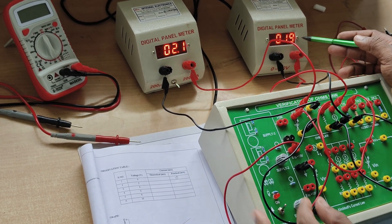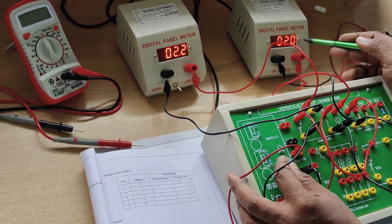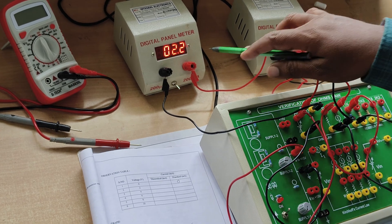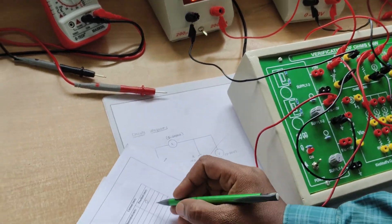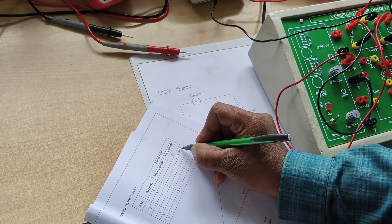Now the voltage is 2 volts, and we are getting 2.2 milliamps. In practice, we write down 2.2 milliamps.